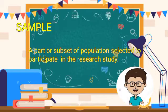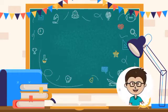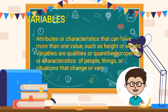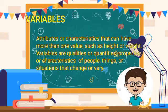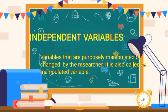Sample is a part or subset of a population selected to participate in the research study. Sampling is the process of selecting a sample from the target population to represent the entire population. Validity is the degree to which an instrument measures what it is intended to measure. Variables are attributes or characteristics that can have more than one value, such as height or weight. Independent variable refers to variables that are purposely manipulated or changed by the researcher; it is also called the manipulated variable.